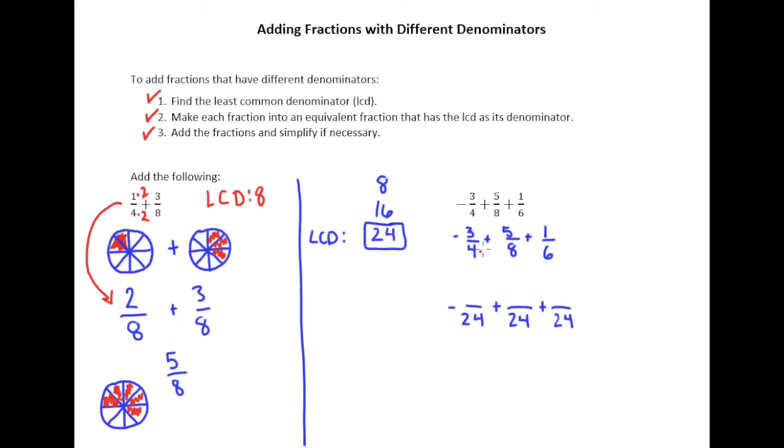What do we do to 4 to make it into 24? We multiply it by 6. What do we do to 8 to make 24? Multiply it by 3, so multiply both the top and bottom by 3. And what do we do to 6? Multiply it by 4, so we multiply the top by 4 as well. We know 3 times 6 is 18, 5 times 3 is 15, and 1 times 4 is 4.